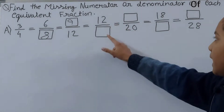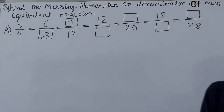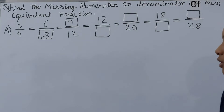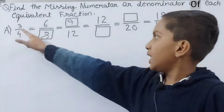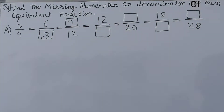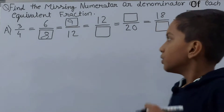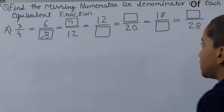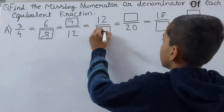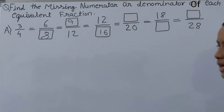Next we have 12/□ — we have the numerator, not the denominator. Our first numerator is 3 and here it is 12: 3 times 4 is 12. So we multiply the denominator 4 by 4 as well: 4 times 4 is 16. So 16 goes in the box.